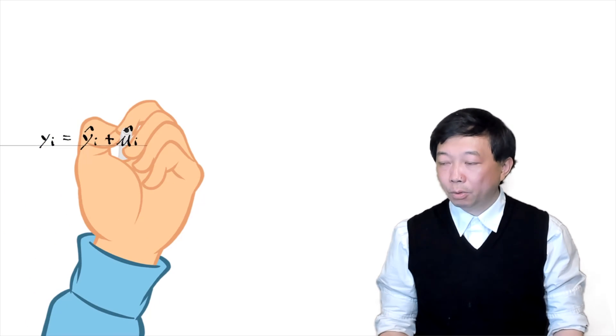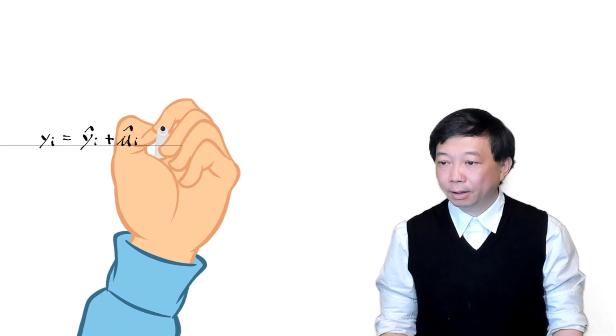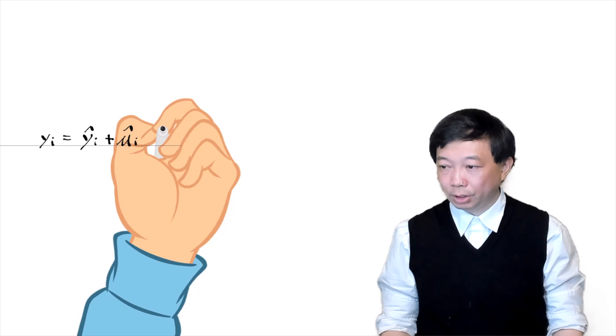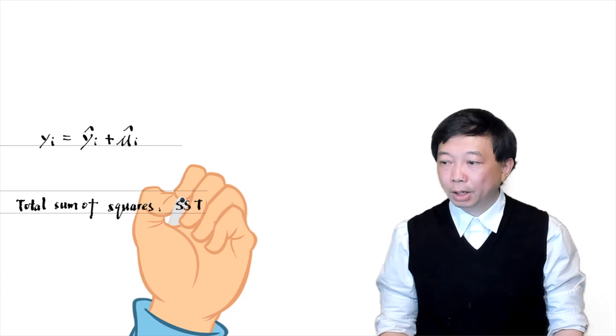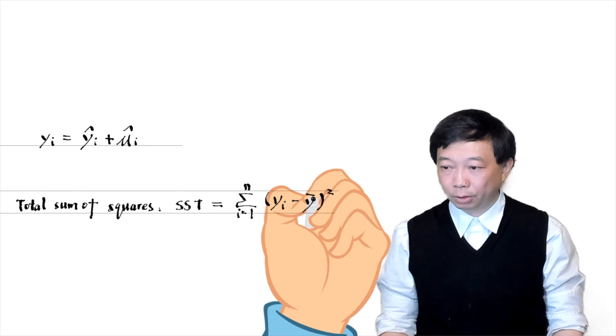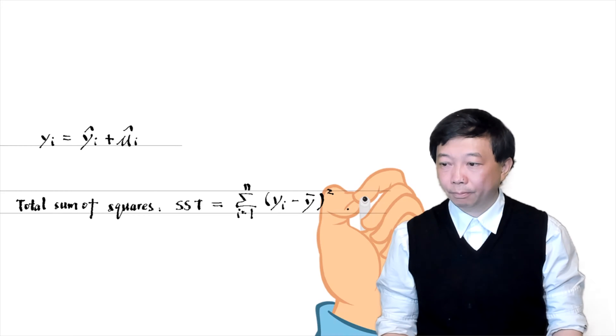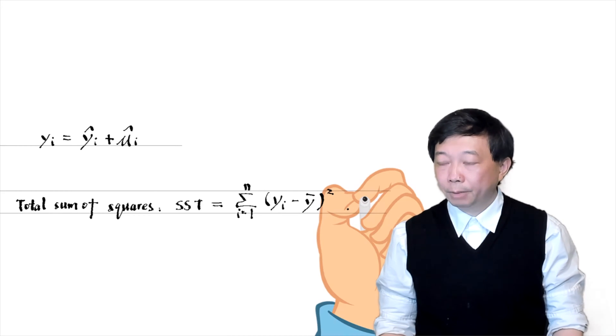For a linear OLS regression, we can write each outcome variable yi as its fitted value yi hat plus its residual mu i hat. The total sum of squares, SST, is the measure of the total sample variation in the yi. That is, it measures how spread out the yi's are in the sample.